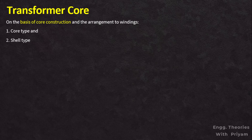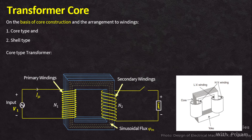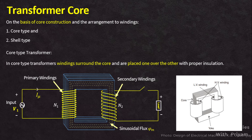In the core type transformer, windings surround the core and are placed over each other with proper insulation. Each limb of the transformer is wound with both primary and secondary, or LV and HV windings, in order to reduce the magnetic leakage.